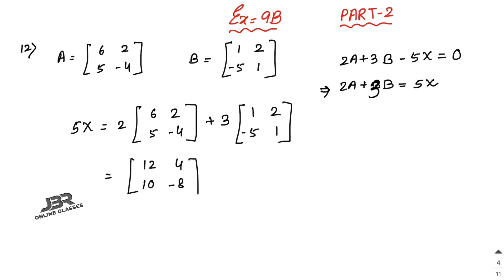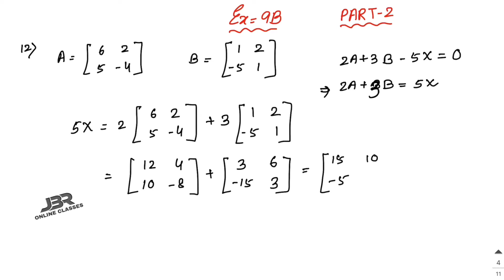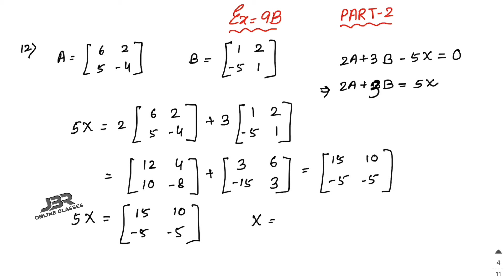Multiply 3 with matrix B: [3, 6; -15, 3]. Now add: 12+3=15, 4+6=10, 10-15=-5, -8+3=-5. So 5X = [15, 10; -5, -5]. Divide each element by 5: X = [3, 2; -1, -1]. That is your answer.